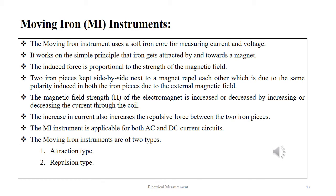The second type of instrument in today's discussion is the moving iron instrument. The moving iron instrument uses a soft iron core for measuring current and voltage. It works on the simple principle that iron gets attracted by and towards a magnet. The induced force is proportional to the strength of the magnetic field. Two iron pieces kept side by side next to a magnet repel each other due to the same polarity induced in both pieces by the external magnetic field. The magnetic field strength of the electromagnet is increased or decreased by increasing or decreasing the current through the coil, and the increase in current also increases the repulsive force between the two iron pieces.